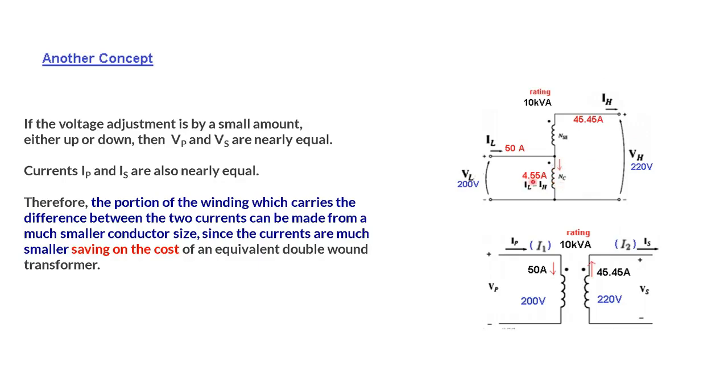But when we construct an auto transformer then we can make this winding of very light wire. It should only be able to handle 4.55 ampere. And this will of course be made with heavy wire. So this is what is being said.